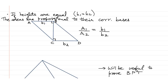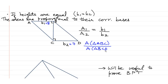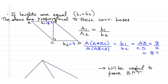Let us say B1 is 8 and B2 is 7. Then area of triangle ABC upon area of triangle BCD equals B1 upon B2, which equals AB upon CD, which equals 8 upon 7. Because the heights are equal, areas are proportional to their corresponding bases.